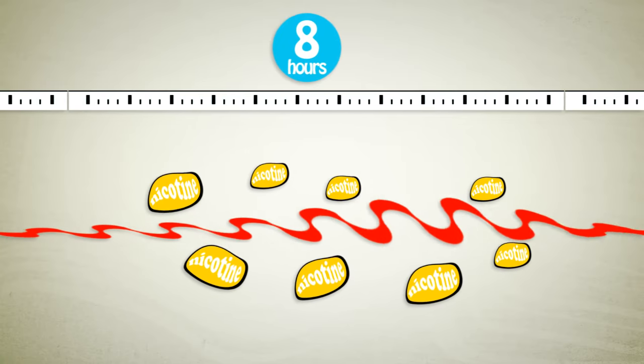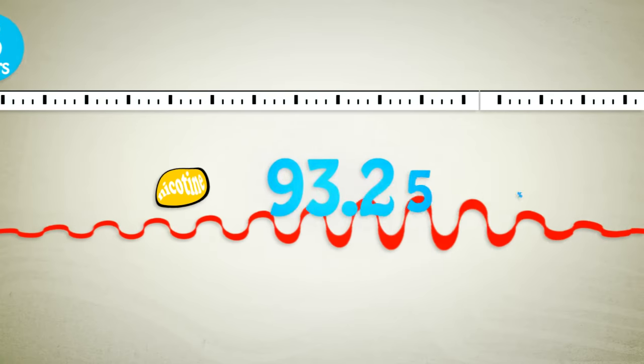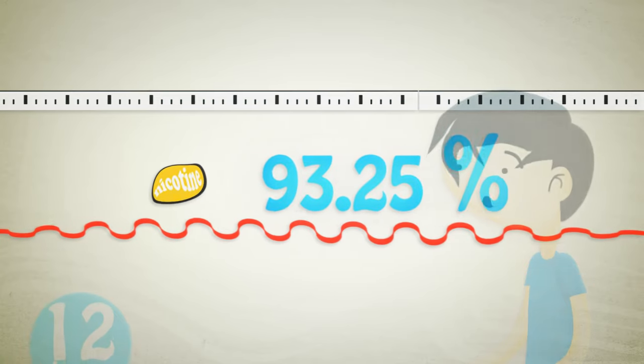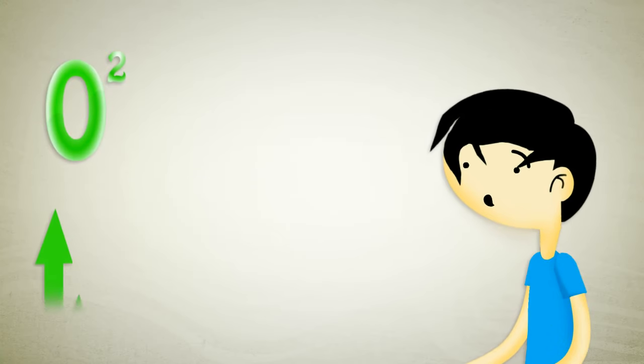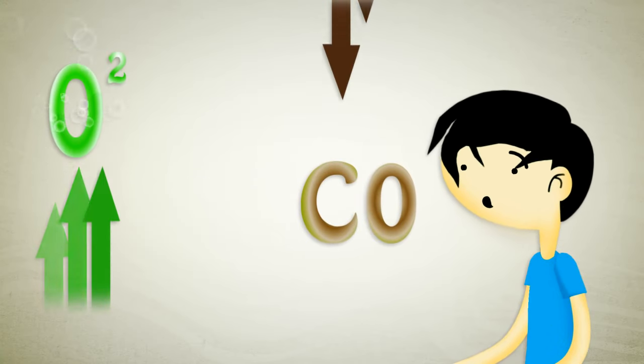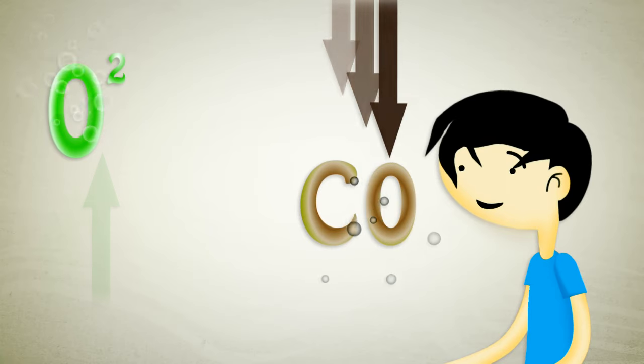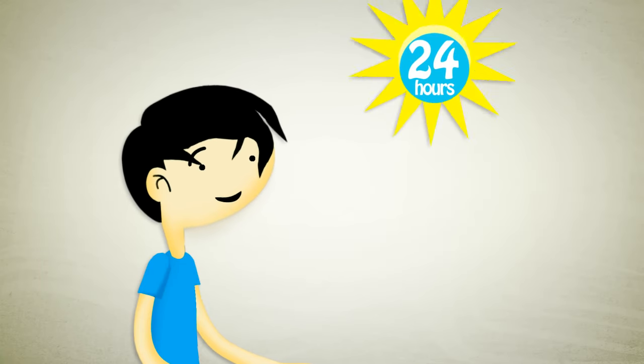After 12 hours, your blood oxygen level increases to normal while your carbon monoxide level drops to normal. After 24 hours, your quitting-related anxieties peak and will return to pre-quitting levels within two weeks.